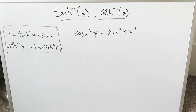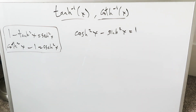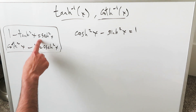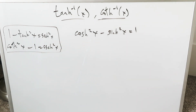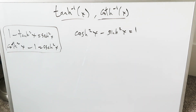Everything will begin with this very fundamental hyperbolic identity: hyperbolic cosine squared x minus hyperbolic sine squared x equals 1. If you take this expression and divide everything by hyperbolic cosine squared x, you'll get this expression here on the top. Take that same identity and divide it by hyperbolic sine squared x, and you'll get this identity here on the bottom. Everything is arising from those two.